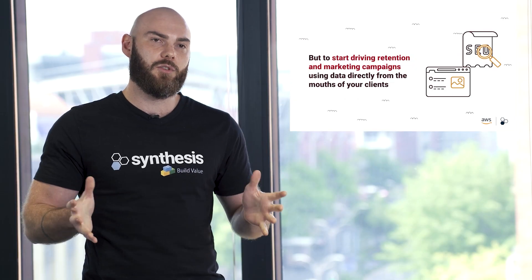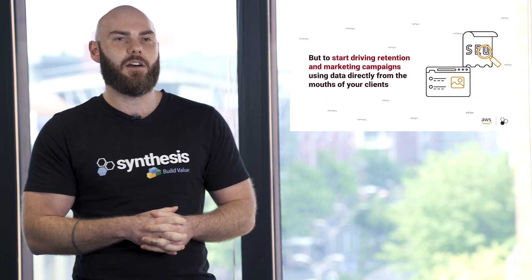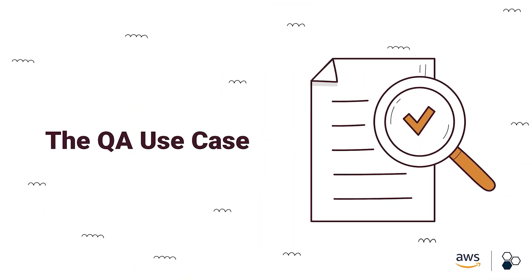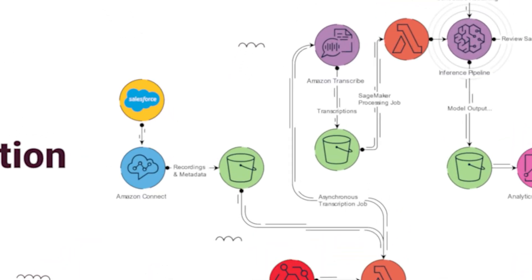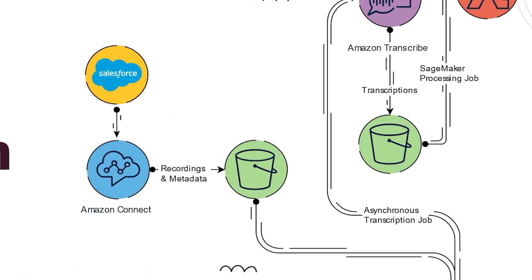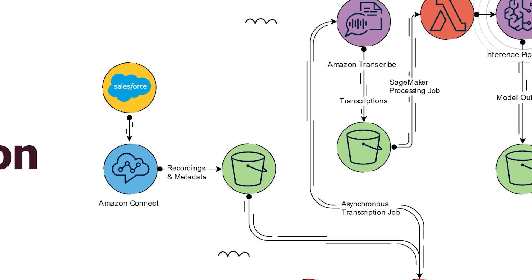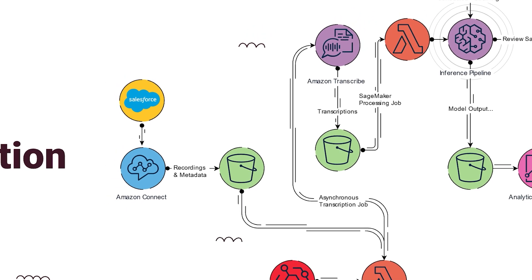How do we build this solution? We're going to be using a whole list of AWS services as well as Salesforce. When the client is in the queue, while they wait for the agent, they are prompted to input their ID number or some way of authenticating themselves upfront. This pre-populates their case in Salesforce and we already have metadata on this case. As the interaction occurs, that call is automatically recorded via Amazon Connect, and after the call is concluded, that recording is stored in an S3 bucket.